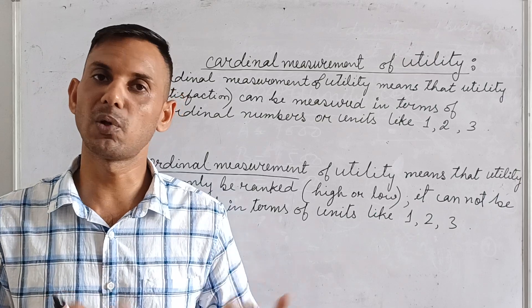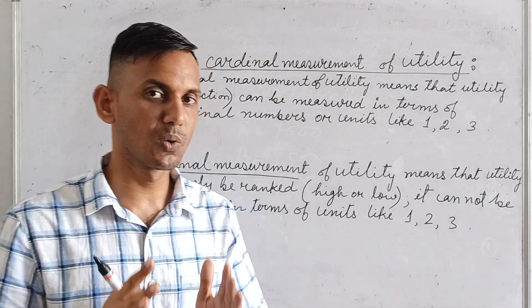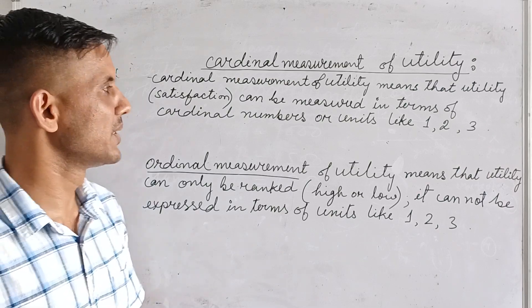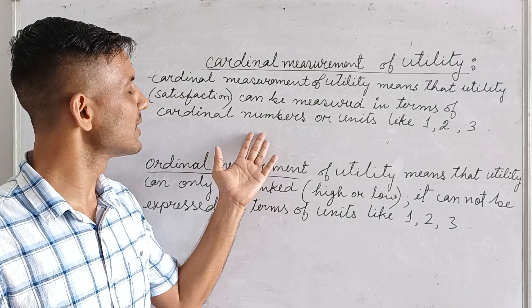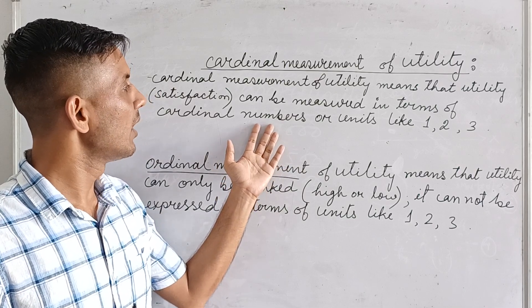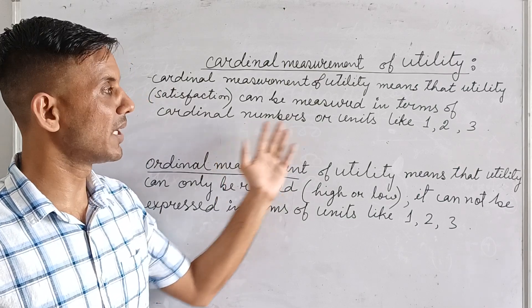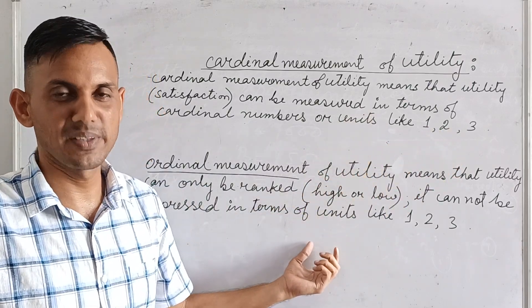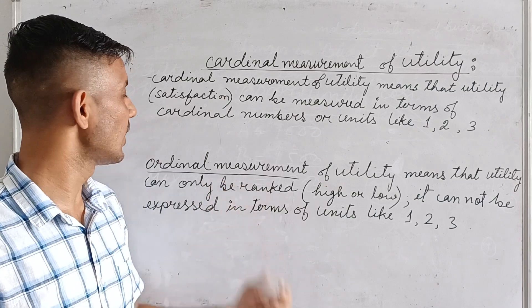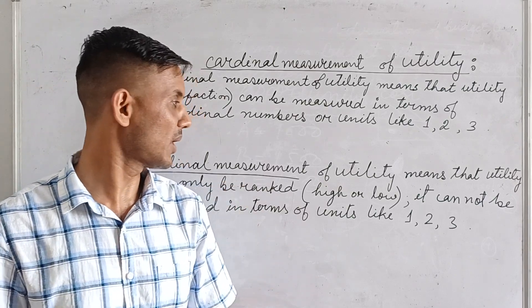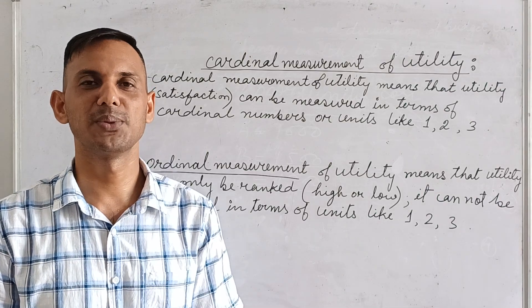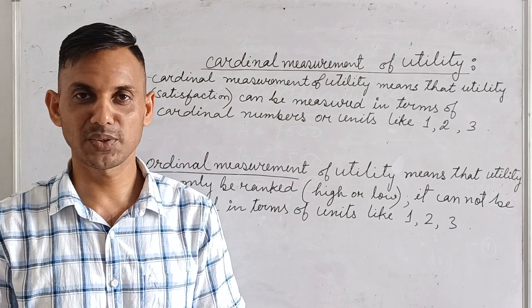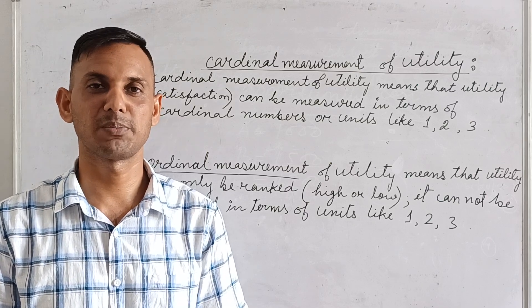Just try to understand the difference: cardinal measurement is when you measure satisfaction in terms of numbers like 1, 2, 3; ordinal measurement is when you cannot express in numbers and can only give a rank — high or low. I hope you understood this lesson. If you have any confusion or doubt, let me know in the comment section below and I will try to help you. Thank you.